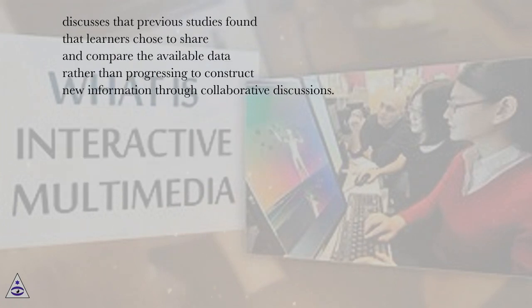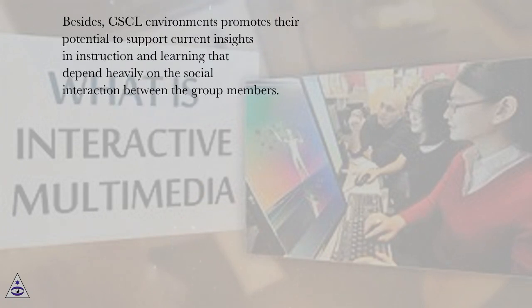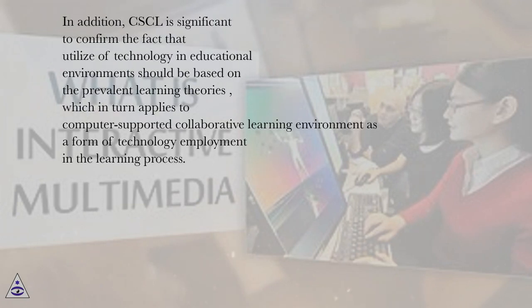Shakur et al. discusses that previous studies found that learners chose to share and compare the available data rather than progressing to construct new information through collaborative discussions. It shows that learners resort to interacting at the level of rapid consensus, where learners accept peers' opinions not necessarily because they agree, but merely to speed the discussion. Besides, CSCL environments promote their potential to support current insights in instruction and learning that depend heavily on the social interaction between group members. In addition, CSCL is significant in confirming that the use of technology in educational environments should be based on prevalent learning theories, which in turn applies to computer-supported collaborative learning environment as a form of technology employment in the learning process.